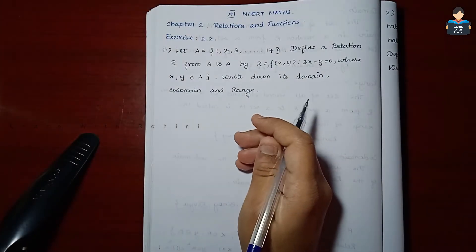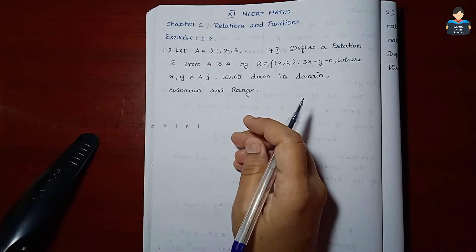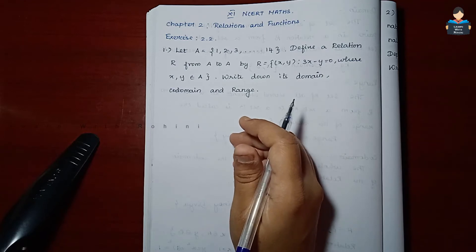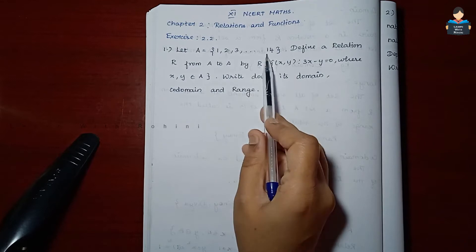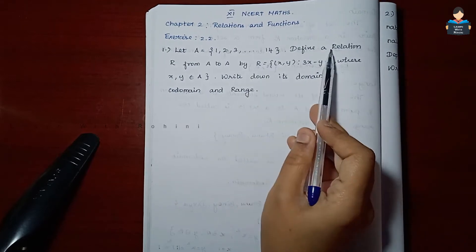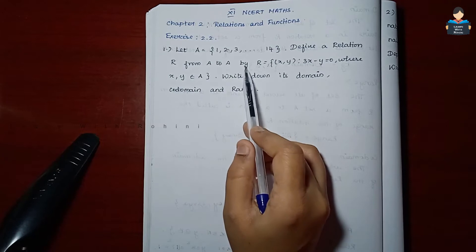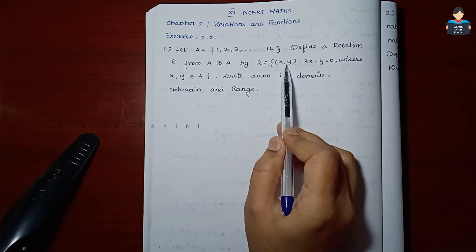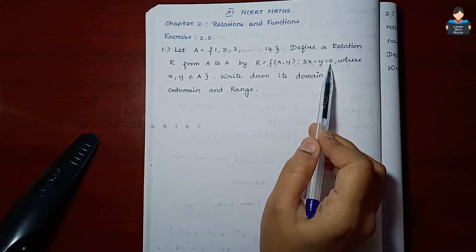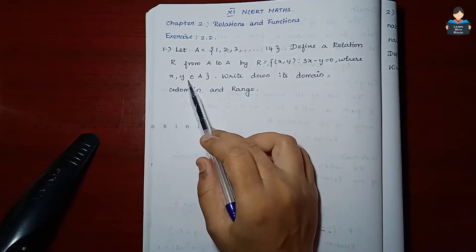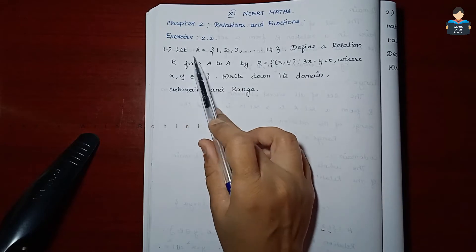Hello everyone, welcome to our channel. In this video, Chapter 2 Relations and Functions, Exercise 2.2, first sum: Let A equal to {1, 2, 3, ..., 14}. Define a relation R from A to A by R = {(x, y)} such that 3x minus y = 0, where (x, y) is an element of A.